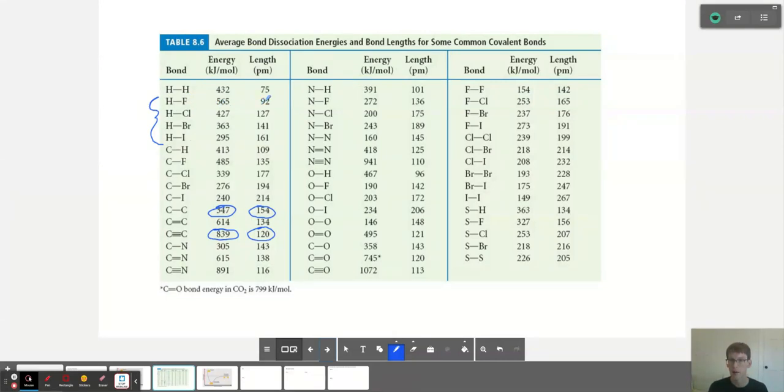Notice how the bond length increases because the halogen gets bigger from fluorine to chlorine to bromine to iodine, but also the strength of the bond decreases as you go down the halogens from 565 kilojoules per mole all the way down to 295. So that's something interesting as well.